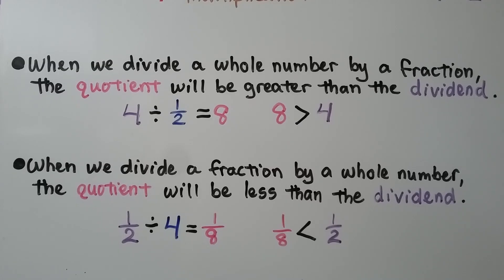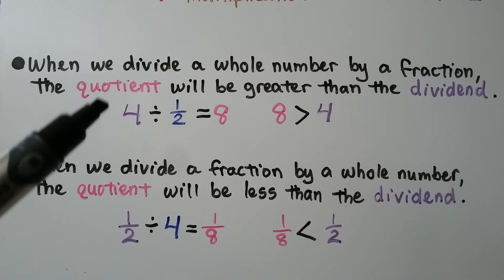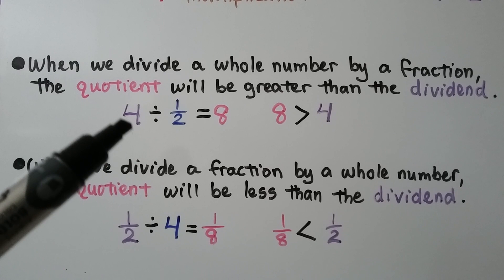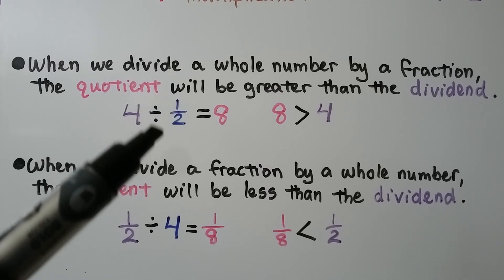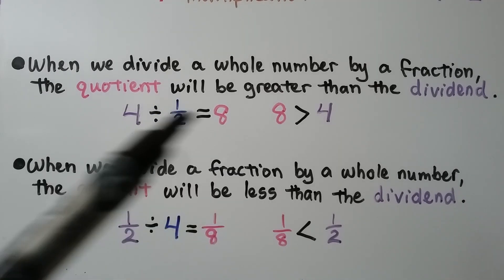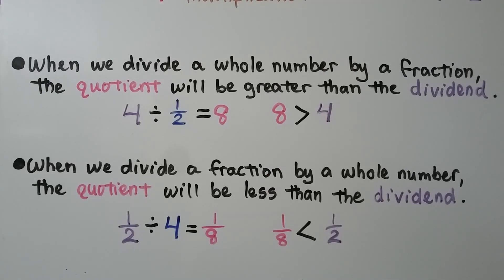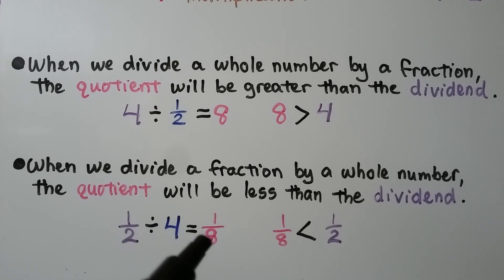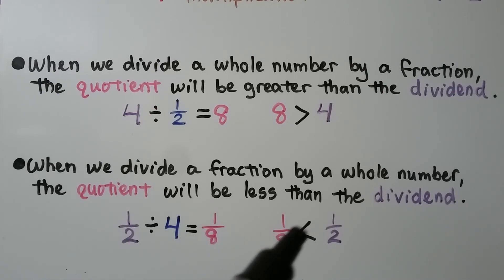When we divide a whole number by a fraction, the quotient will be greater than the dividend. When we divide a fraction by a whole number, the quotient will be less than the dividend. For example, one-eighth is less than one-half.